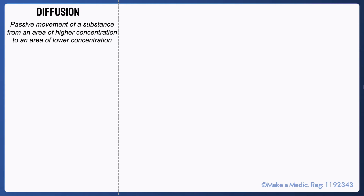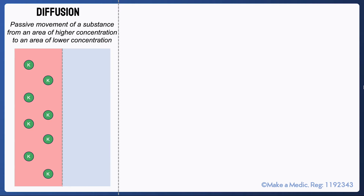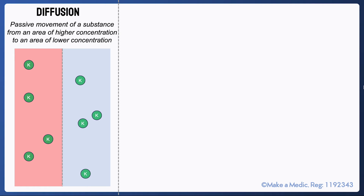There are two main processes that you need to be familiar with to understand the differences between haemodialysis and haemofiltration. Firstly, diffusion refers to the passive movement of a substance from an area of higher concentration to an area of lower concentration. The second process can be broken down into two separate terms: ultrafiltration and convection.